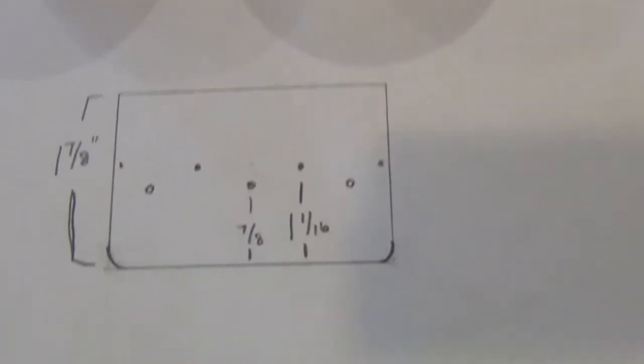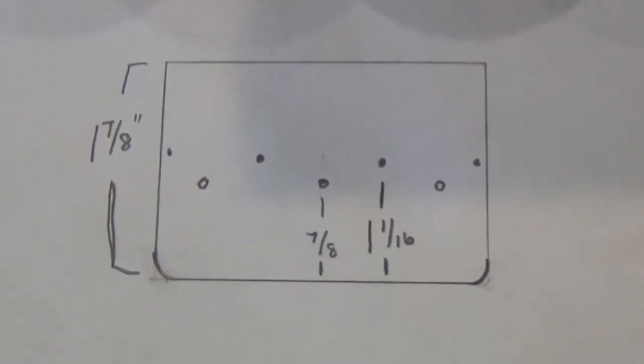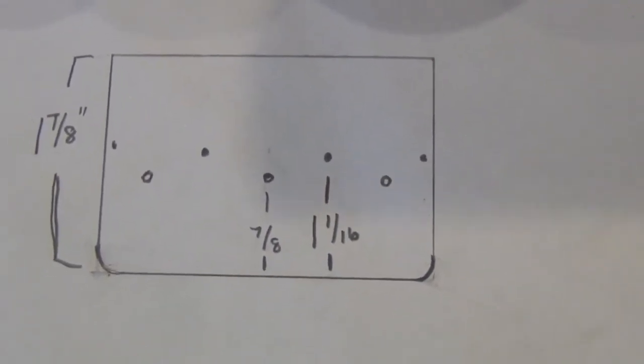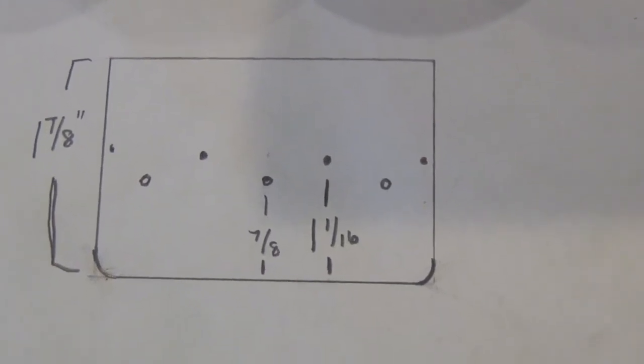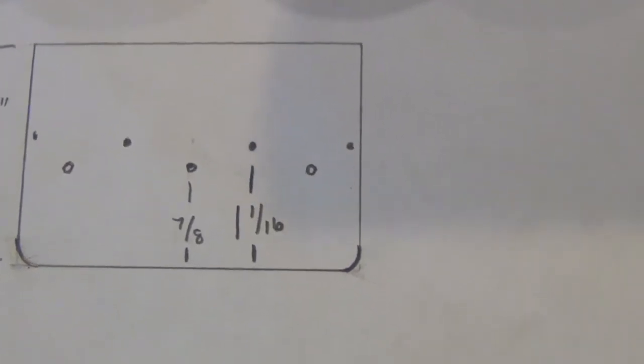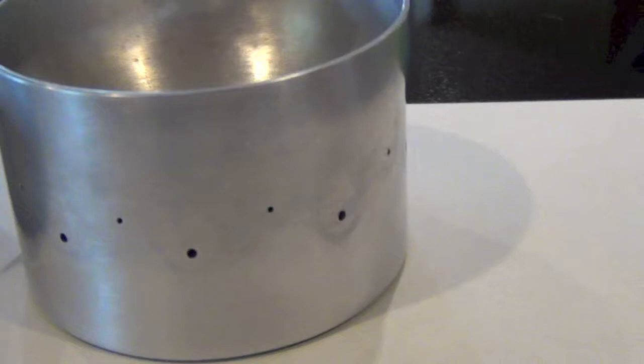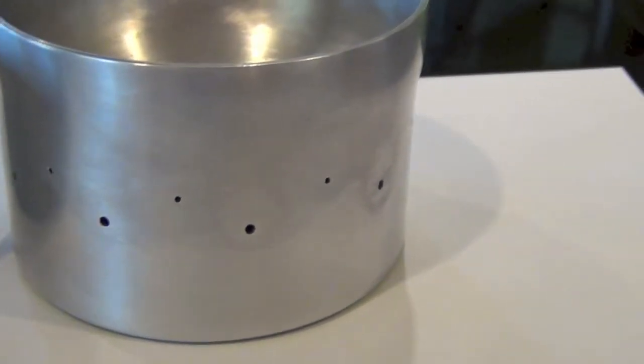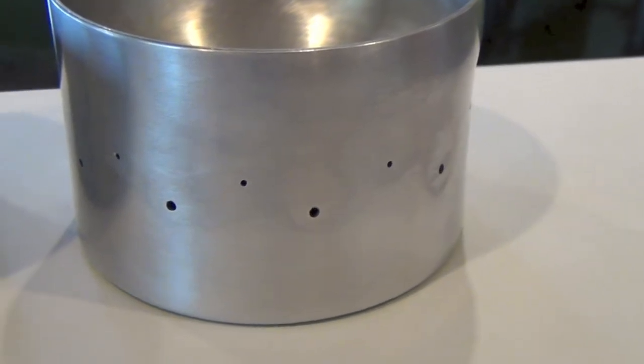My dimensions on the ones I made, they are 1 and 7/8 inches tall. The bottom row of holes is 7/8 inches from the bottom and the top row of holes is 1 and 1/16. The holes on the bottom are 1/16 of an inch in diameter and the top row of holes, the smaller holes are 1/32nd of an inch in diameter.